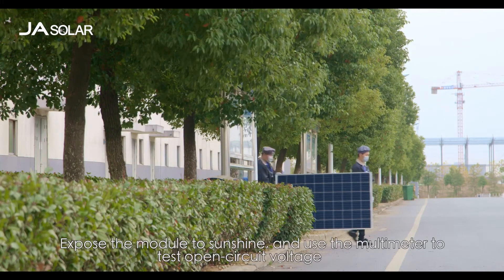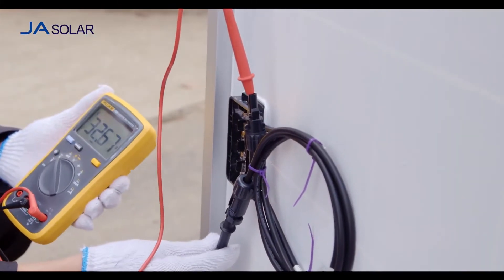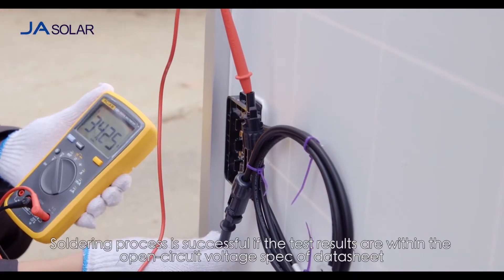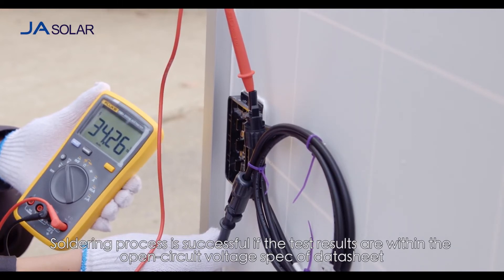Expose the module to sunshine and use the multimeter to test open circuit voltage. Please refer to JA Solar product datasheet. Soldering process is successful if the test results are within the open circuit voltage spec of datasheet.